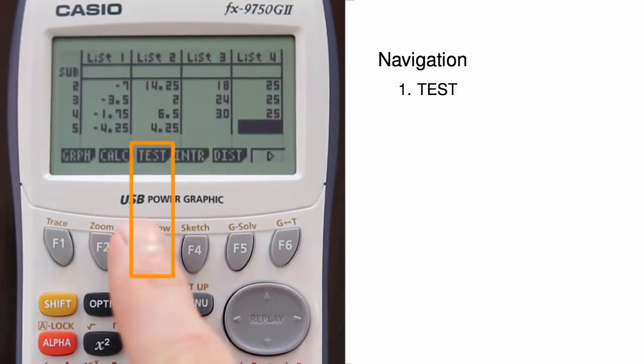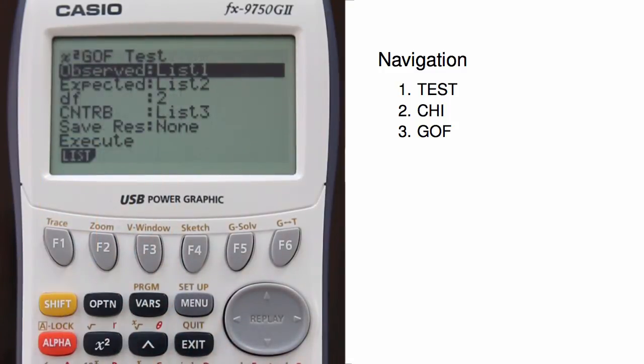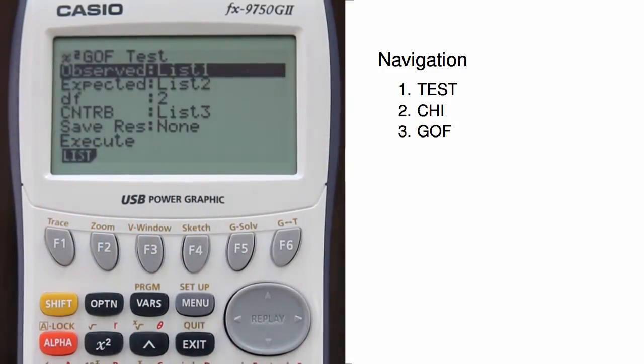Alright, now we can jump into test, then chi for chi-square test, and then choose gof for goodness of fit, which is the same as a one-way chi-square test.